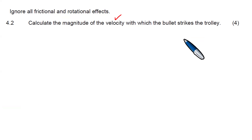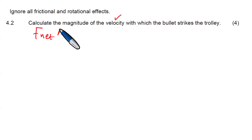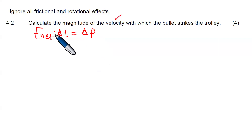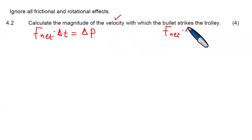This is way too easy. The formula we need to use is the impulse formula: F_net × ΔT equals the change in momentum. This formula defines F_net × ΔT, which is called impulse. The F_net is 591 Newtons, and the change in time is 0.02 seconds, because that is how long the bullet was in contact with the trolley.